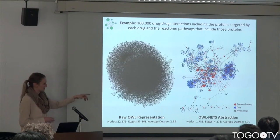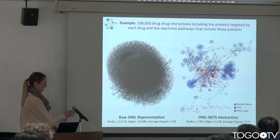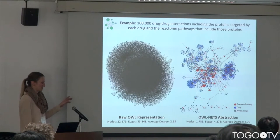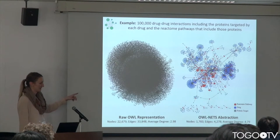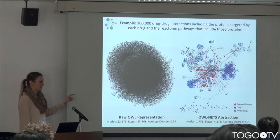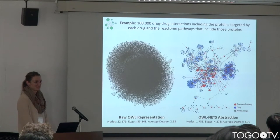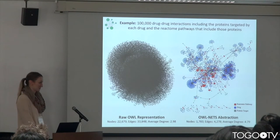On the other side I've shown the NETS abstraction, again with colored nodes to match, where red are the Reactome pathways, blue are the drugs, and gray — which are really tiny — are the protein targets of those drugs.